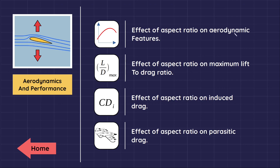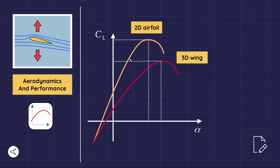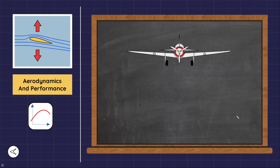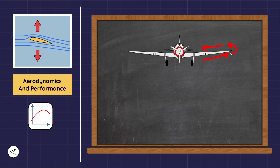As the aspect ratio increases, the aerodynamic features of a three-dimensional wing get closer to its two-dimensional airfoil section. The lower surface of the wing has higher pressure than the upper surface, and because of that, the flow near the wing tip tends to curl around the tip. This causes a spanwise component of flow from the tip toward the wing root on the top surface, and from the root toward the tip on the bottom surface, resulting in a tip vortex.